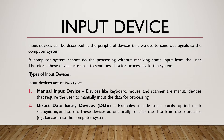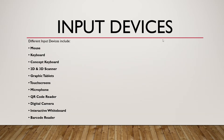These devices automatically transfer the data from the source file, e.g. barcode, to the computer. For the purpose of your syllabus, you need to know these different input devices and how they work. We have the mouse, keyboard, concept keyboard, 2D and 3D scanner, graphic tablets, touch screen, microphone, QR code reader, digital camera, interactive whiteboard, barcode reader, and sensor, which we'll look at at the end of this video session.